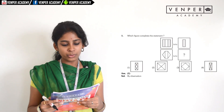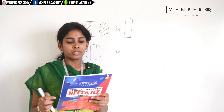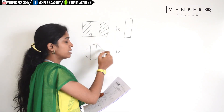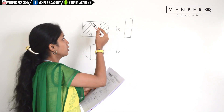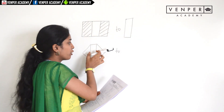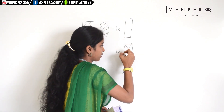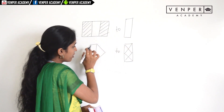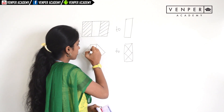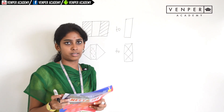The first question: which figure completes the statement? They have given an example. When you fold the figure with the front side, this is how it will look. When you fold the figure, certain parts will overlap here and here. Based on observation, option one will be your answer.